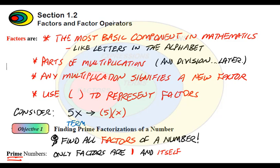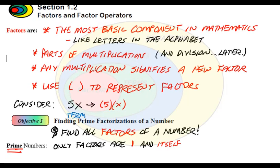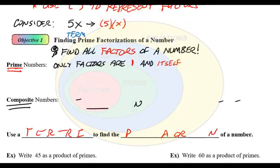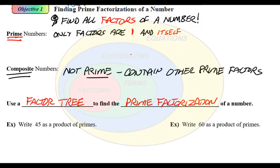Alright. So the idea is that factors are the most important piece, component of mathematics. And I want us to be able to find all the factors in a number. So the key to this is to be able to find all factors of a number. And in order for us to do this, the first thing you need to do is just understand what types of numbers there are in terms of factors.